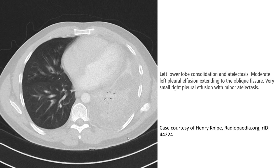Another case where we can see left lower lobe consolidation and atelectasis, with moderate left pleural effusion extending to the oblique fissure. And very small right pleural effusion with minor atelectasis, which is not clearly seen in this image.